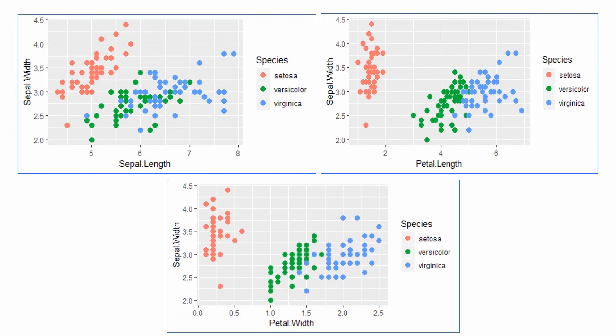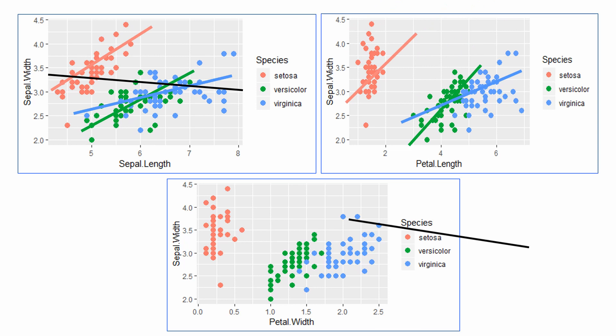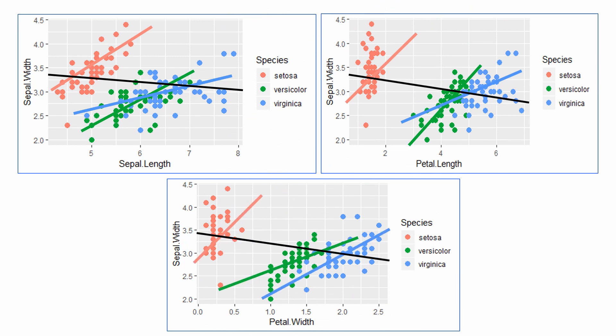We observe that all three charts are negatively correlated — that is, when one variable increases the other decreases. Interestingly, when the same scatter plots were plotted separately by each family, we observe that amongst the same set of variables we have a positive correlation, indicated by the colored lines. The black line represents the trend line when the data was analyzed at the overall level — a very interesting reversal of the trend.